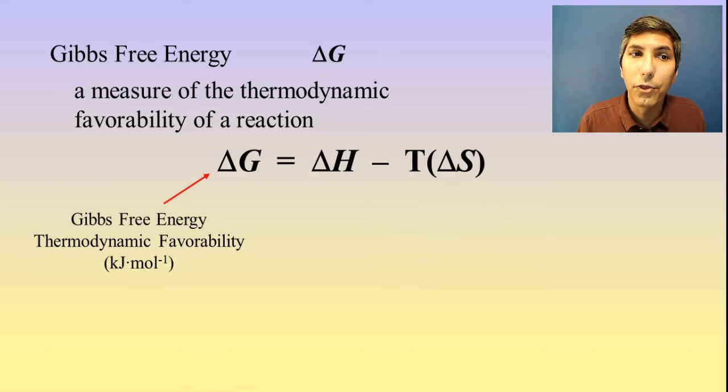If that delta G is a negative number, that means it is going to be thermodynamically favored. However, if the delta G is a positive number, then it's not going to be thermodynamically favored. And the units that we use are kilojoules per mole.